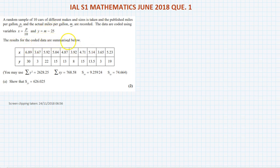The results for the coded data are summarized below. Show that S_yy is equal to 626.025. Part a: we have to find the value of S_yy. We have two formulas for S_yy. One is sigma (y_i minus y_bar) squared, but most of the time what we use is sigma y squared minus (sum of y) squared divided by the total numbers.